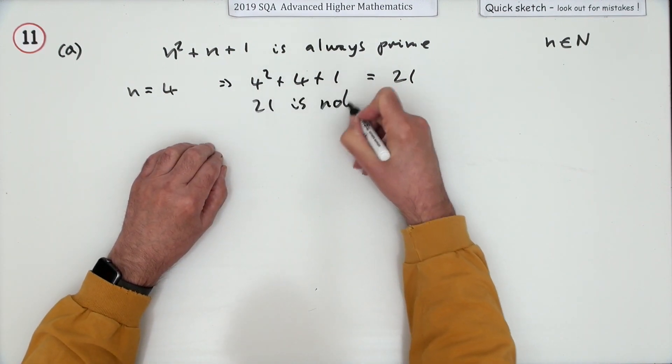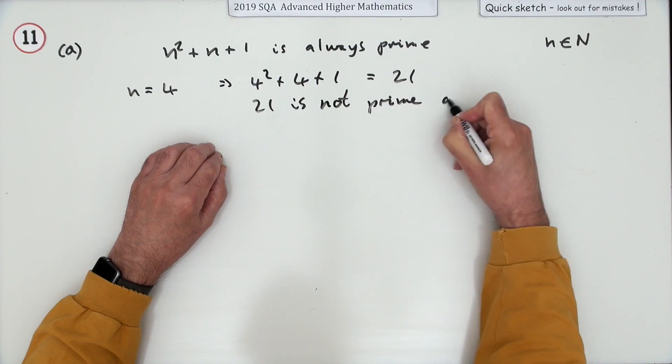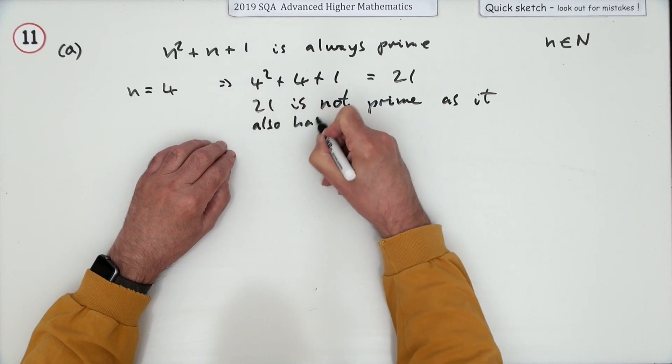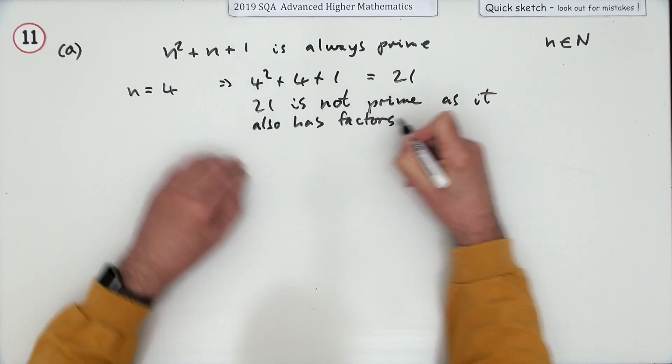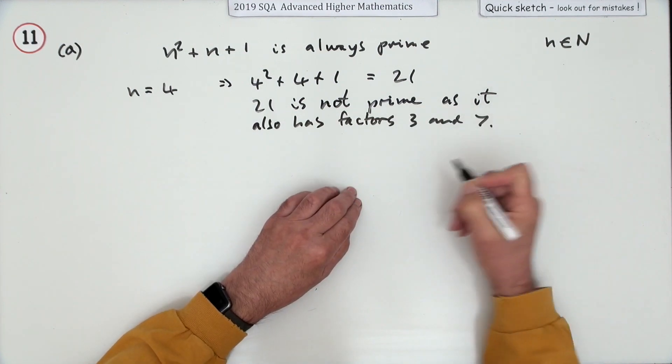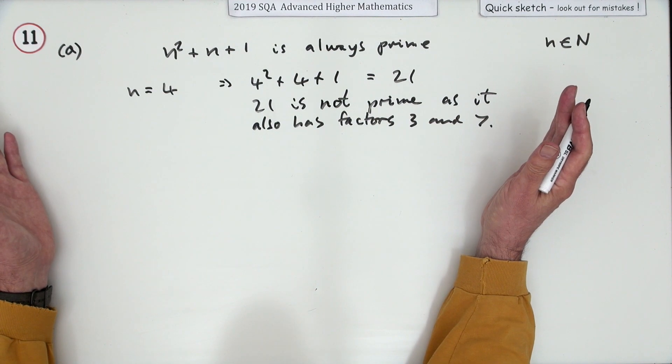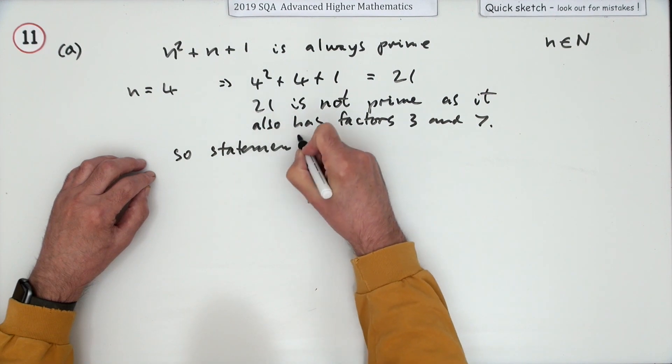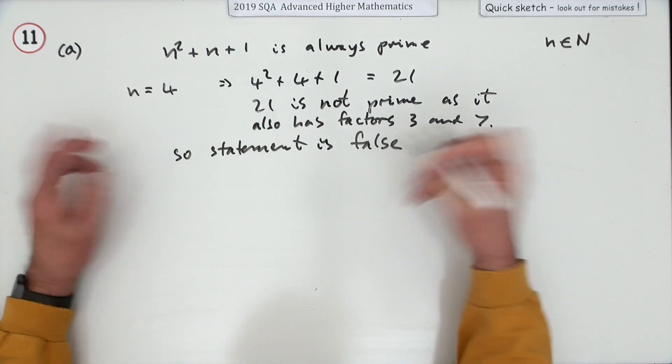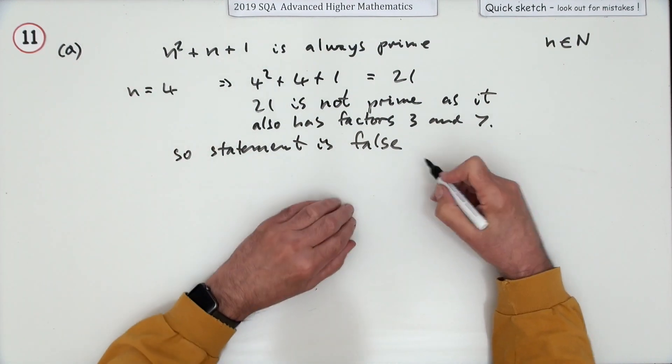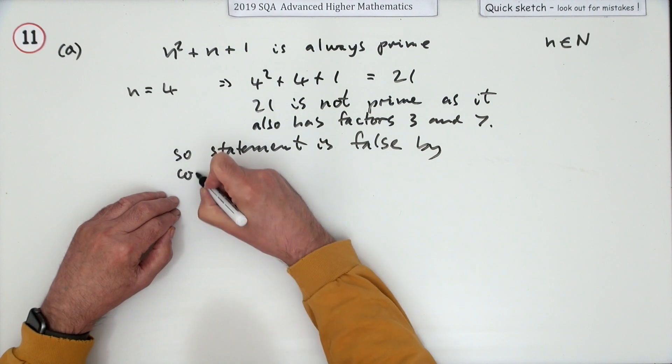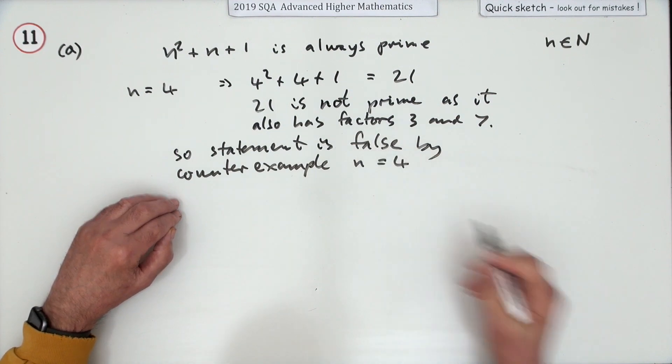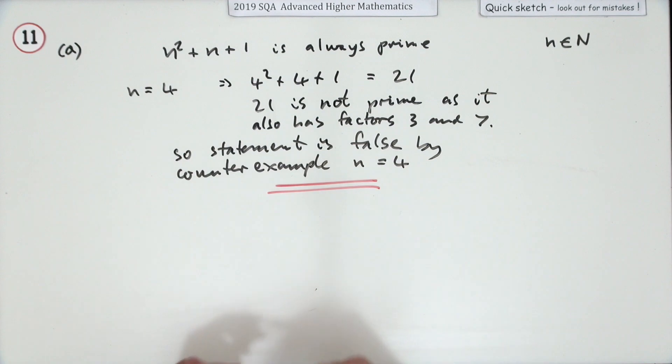Twenty-one, maybe I've got to demonstrate it's not prime as it also has factors three and seven. Statement is false. Probably just need to put: by counterexample, n equals four.